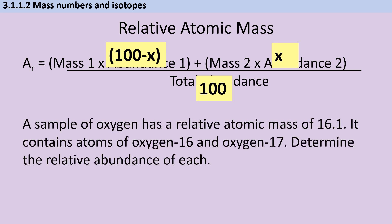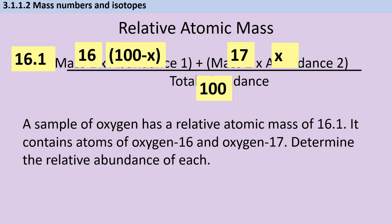So let's look at this in action. A sample of oxygen has a relative atomic mass of 16.1. It contains atoms of oxygen-16 and oxygen-17. Determine the relative abundance of each. I start by substituting in the numbers that I already know. So the relative atomic mass was 16.1, the lighter isotope is 16, and the heavier isotope is 17.